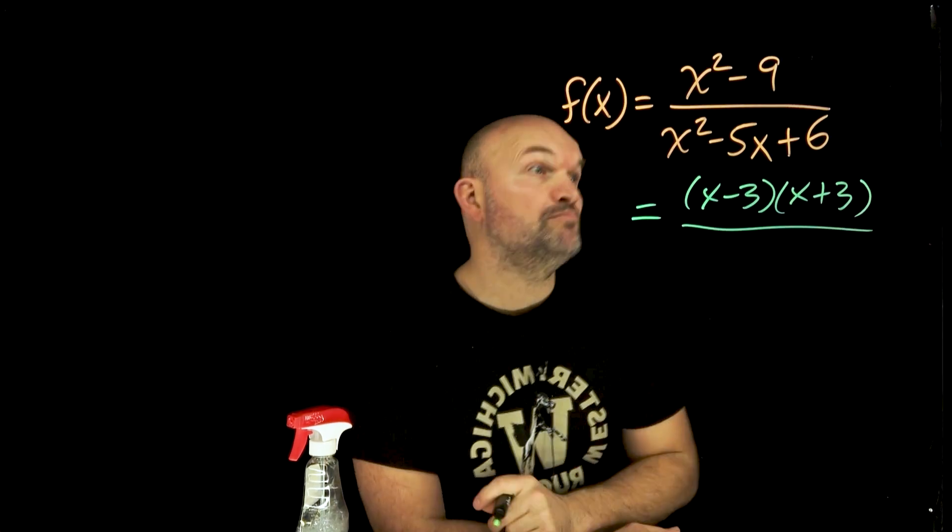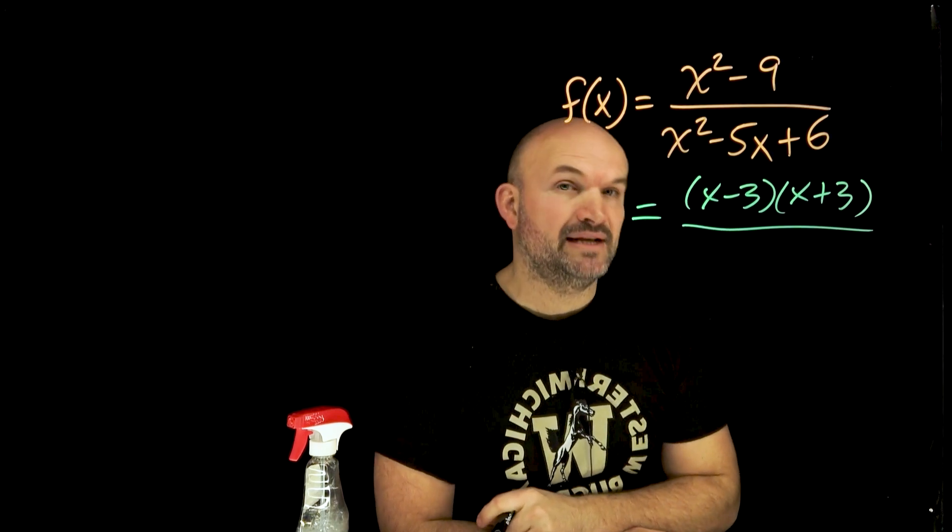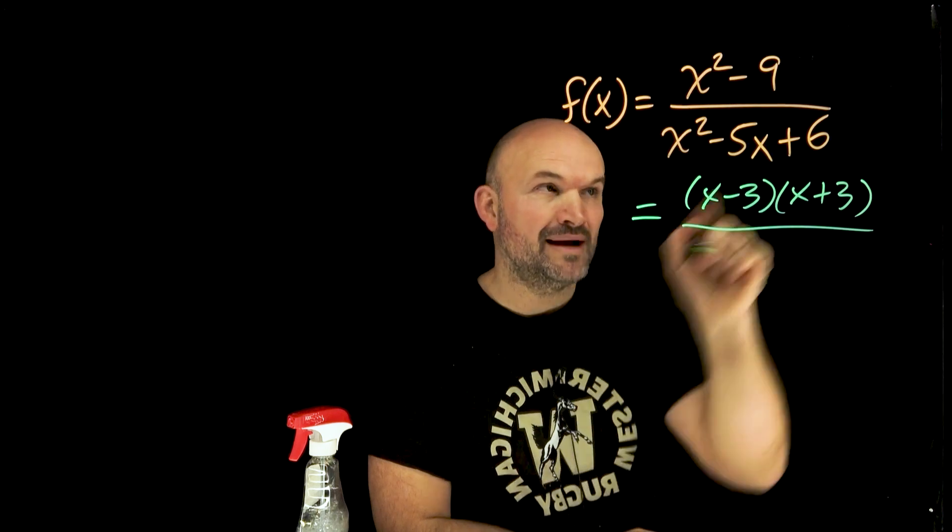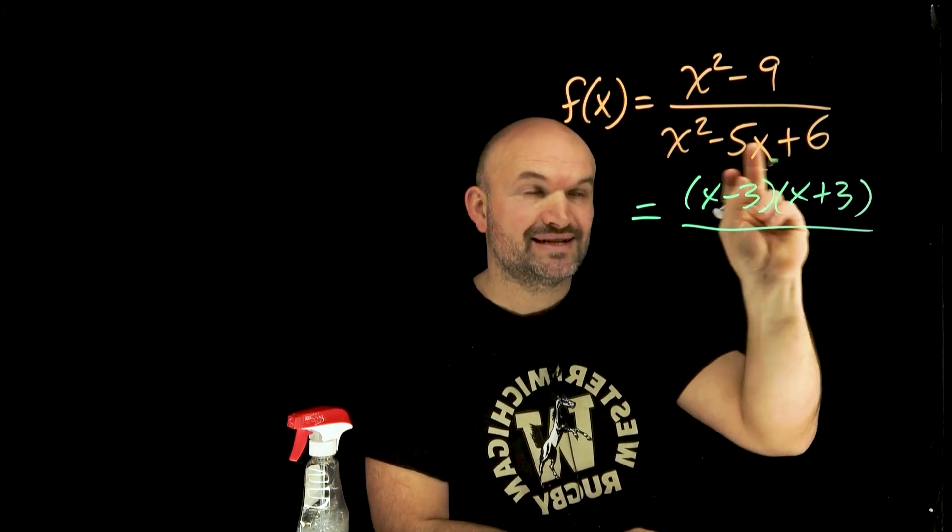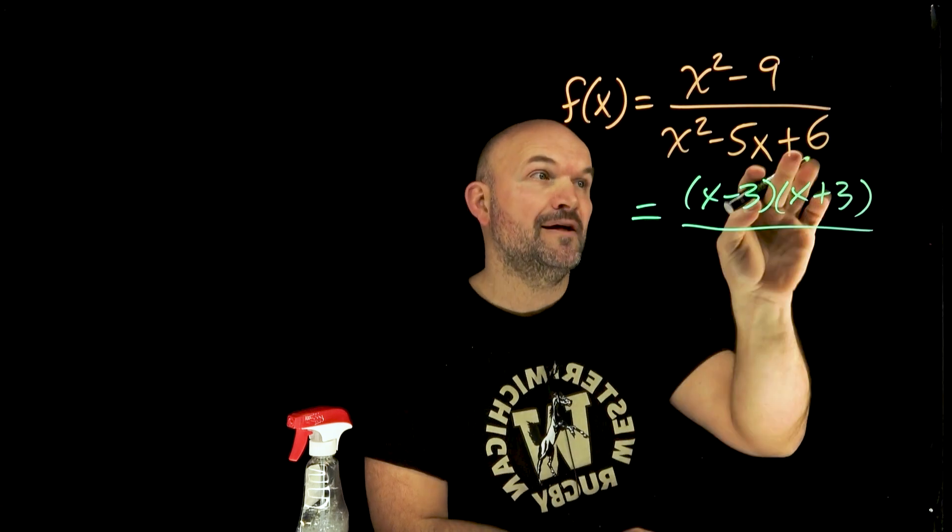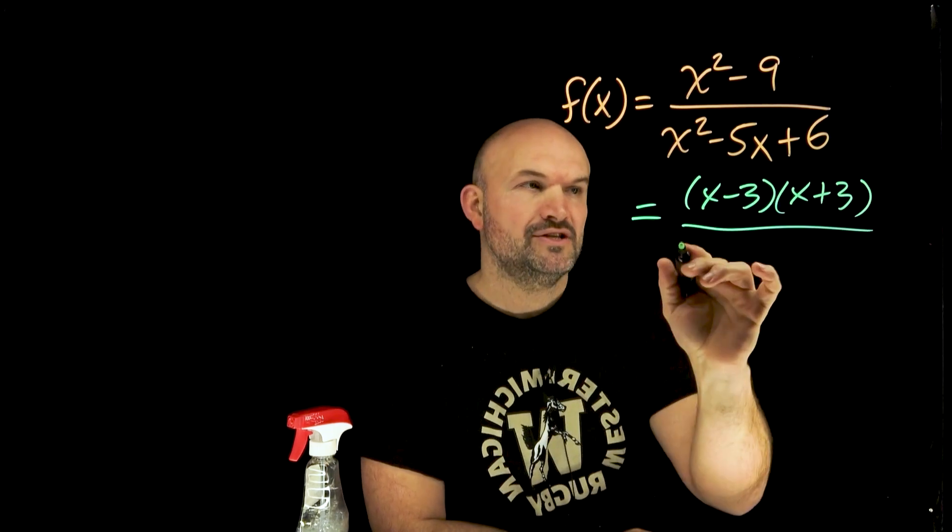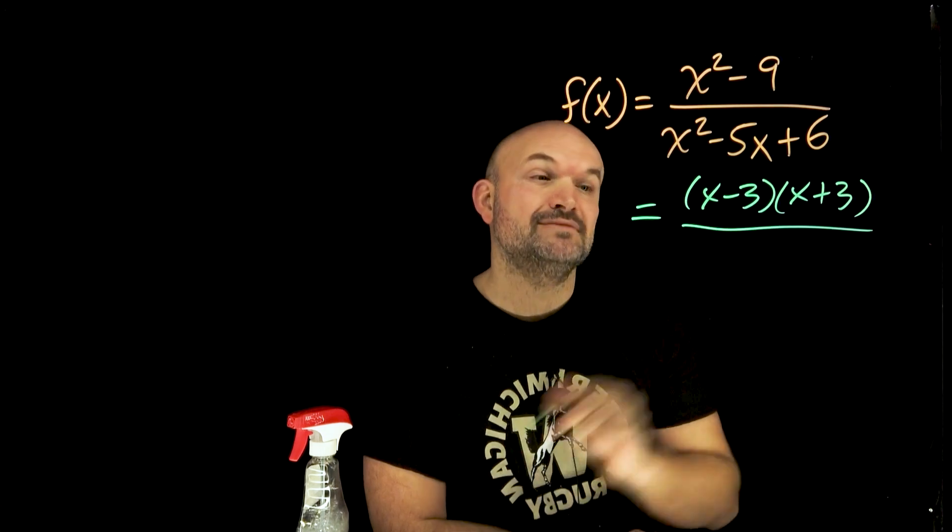And then this, we're thinking what two numbers multiply to give me negative six and add to give me negative five. And do not say positive six and negative one, because those do not multiply to give me positive six. I need two positive numbers or two negative numbers that multiply to give me six, but they have to be negative because they have to add to negative five. So therefore, that's going to be x minus three, x minus two.